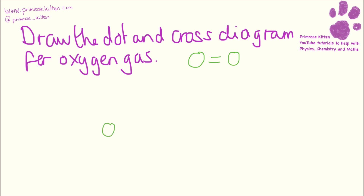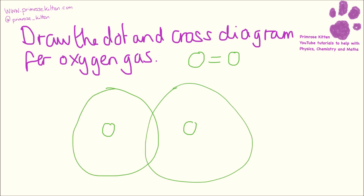So if we draw our oxygens and then we draw our overlapping circles — mine aren't very neat, but hey-ho — oxygen has six electrons. Each bond is a pair of electrons. Each bond represents one electron coming from one and one electron coming from the other. So when we have a double bond, there are four electrons in the middle.